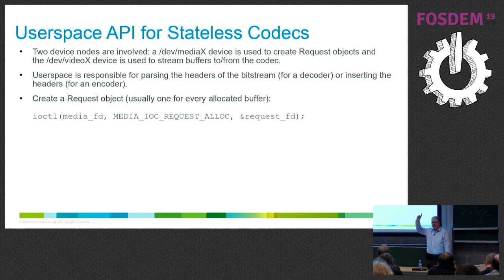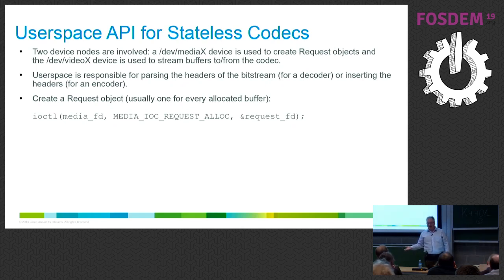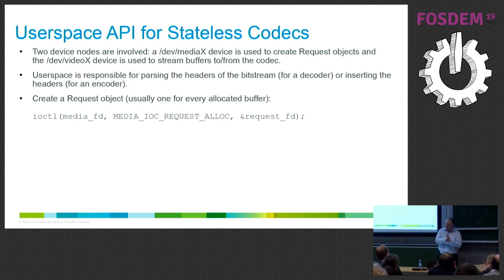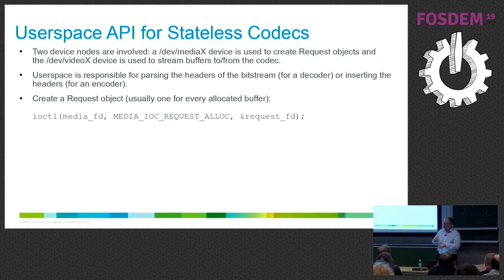So how do you use it for a stateless codec? You have two device nodes — the video node that was always there, and now you also need to use a media controller node. The media controller shows the internal topology of your hardware; it's primarily meant for complex video pipelines but we also use it for stateless codecs, keeping it consistent. If you have a stateless codec, user space is responsible for parsing the bitstream — no longer the hardware. It parses out the headers and figures out the state of the buffer to be decoded. I'll focus on decoders here.